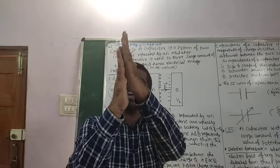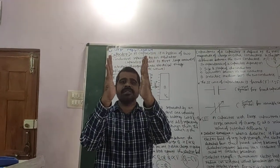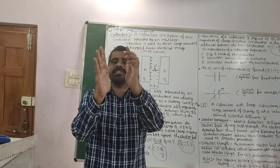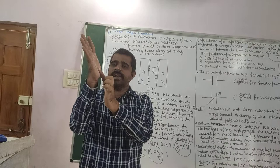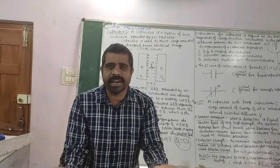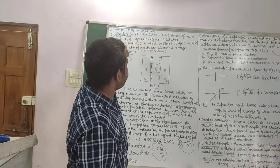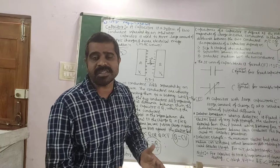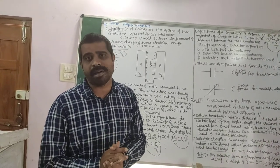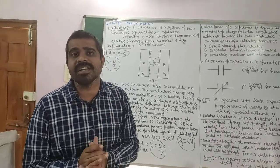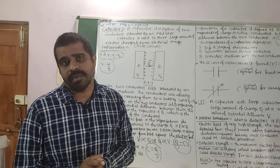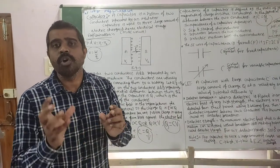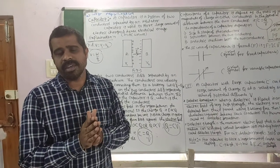Looking at the diagram: this is one parallel plate A and another parallel plate B, separated by a dielectric substance — that constitutes a capacitor. Two conductors separated by an insulating or dielectric substance makes a capacitor. In daily life we use capacitors in fans, motor pumps, and TV circuits. On the back side of a TV you can see small capacitors; the basic function is to hold or store the charges.